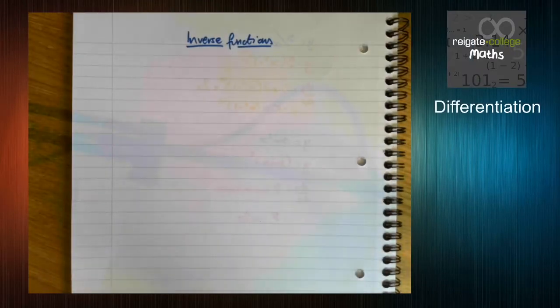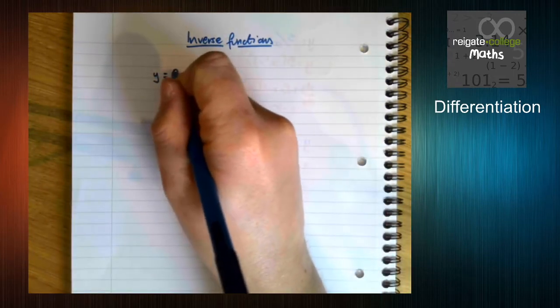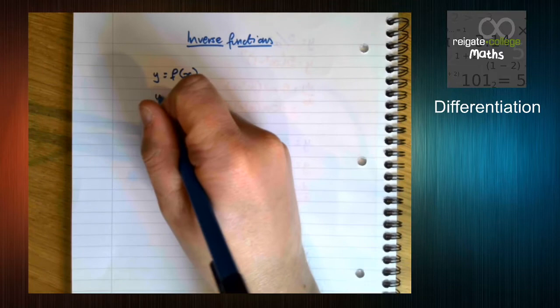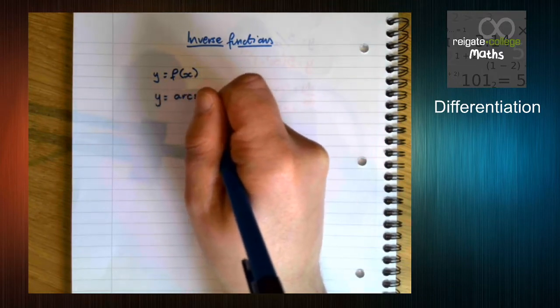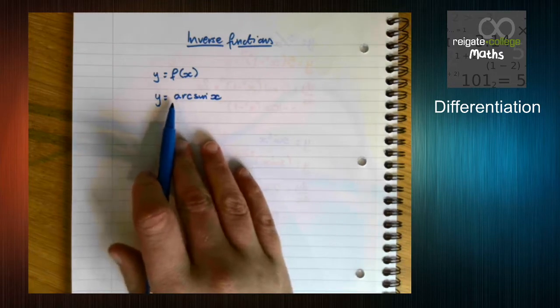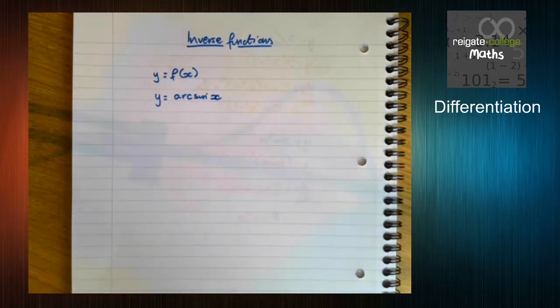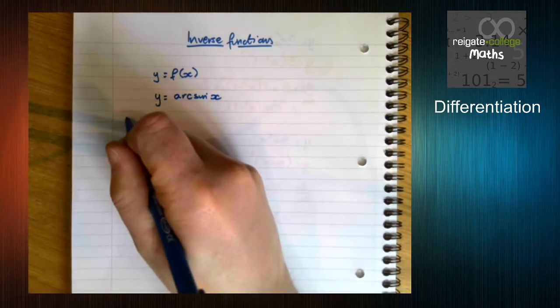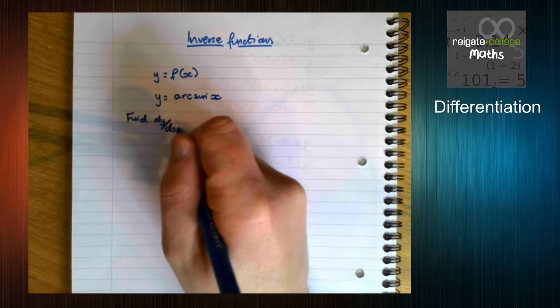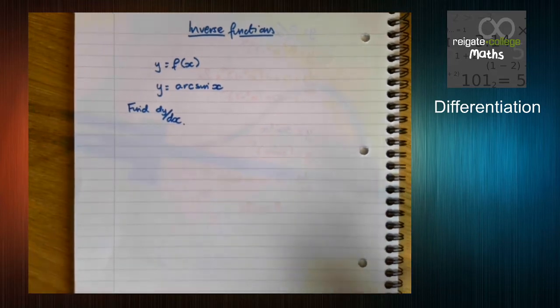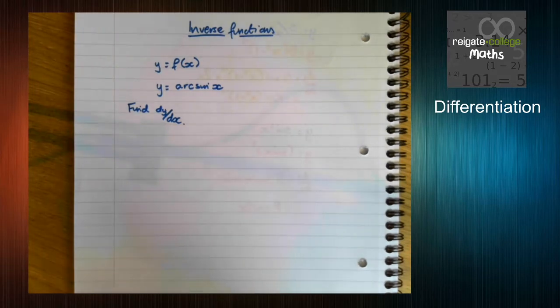So up until now, we're used to differentiating functions that look like y = f(x) and are of a nice form. But what if we get something like y = arcsin(x)? For those of you doing further maths, you'll learn how to differentiate this in a different way, but for just normal maths, this is a little bit of a problem. If we want to find dy/dx, this is slightly problematic. But if we think about what differentiation actually does and how it works, this is not too bad a question. So let's have a look at it.